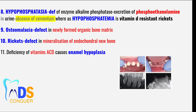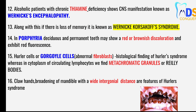Point number nine: osteomalacia is a condition where a defect is seen in the newly formed organic bone matrix. Point number ten: rickets is a condition where a defect is seen in the mineralization of endochondral bone. Point number eleven: deficiency of vitamins A, C, and D causes enamel hypoplasia.